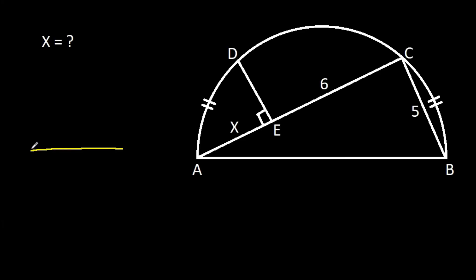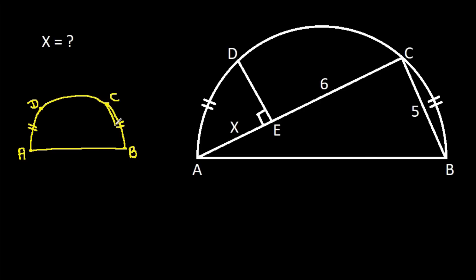In this semicircle, arc BC is equal to arc AD. That means line segment BC will be equal to line segment AD. Since BC is 5, AD will also be 5.